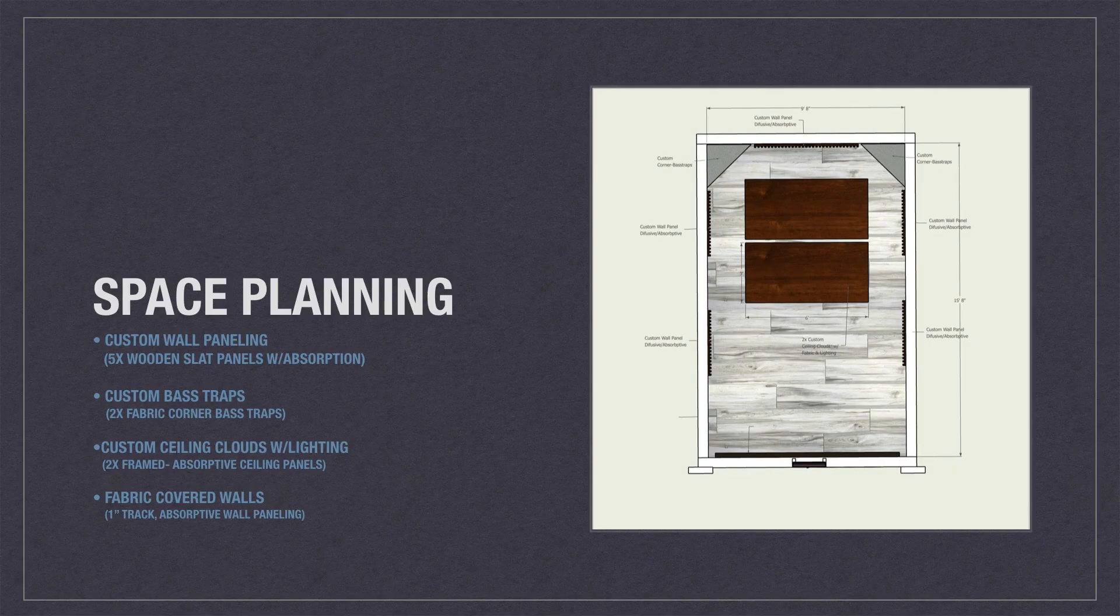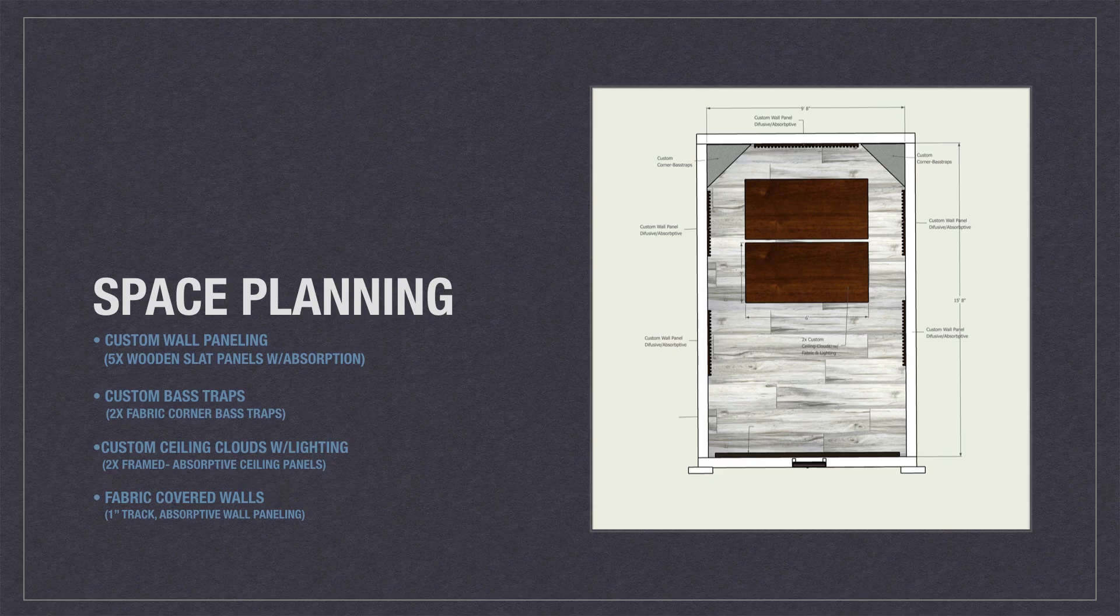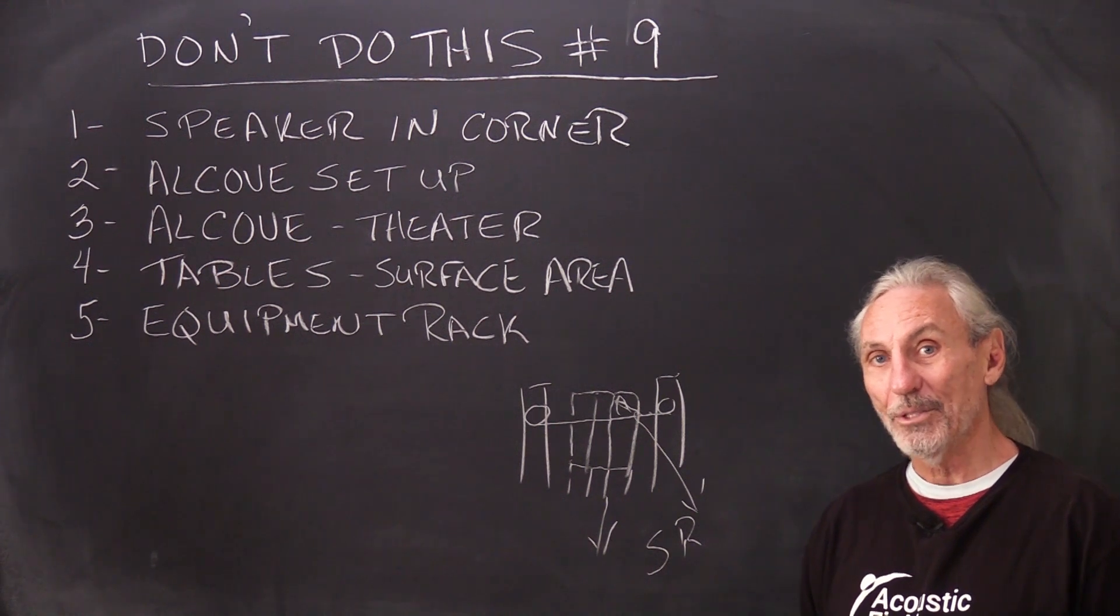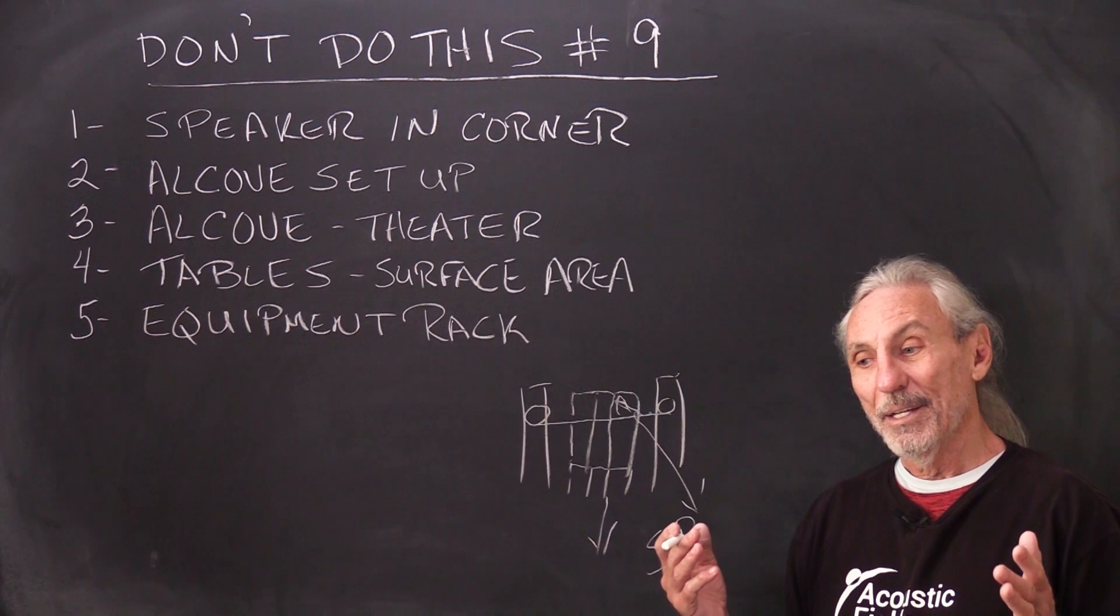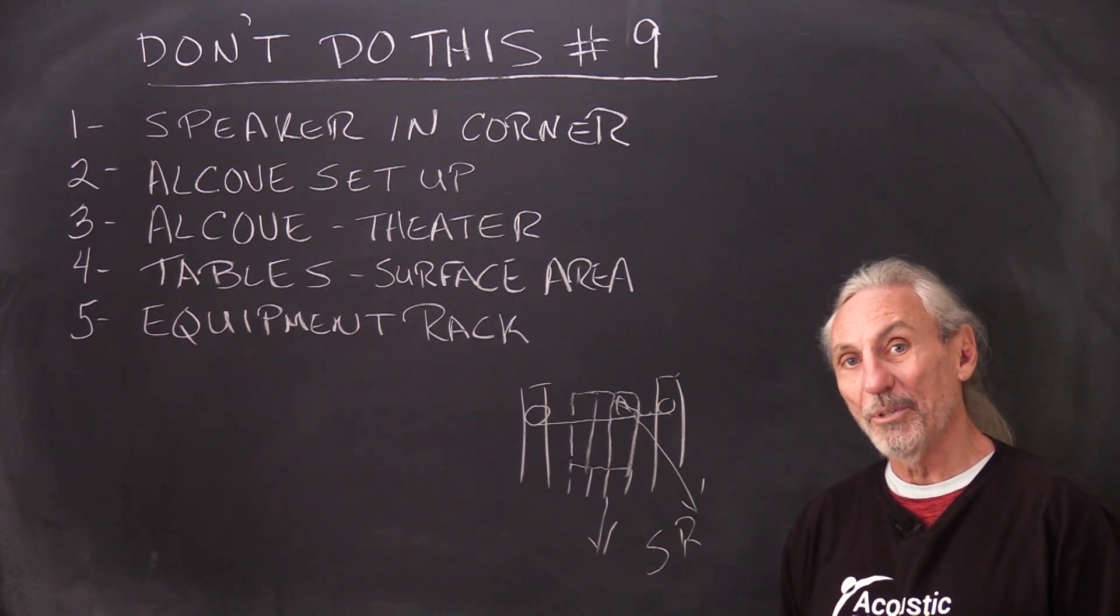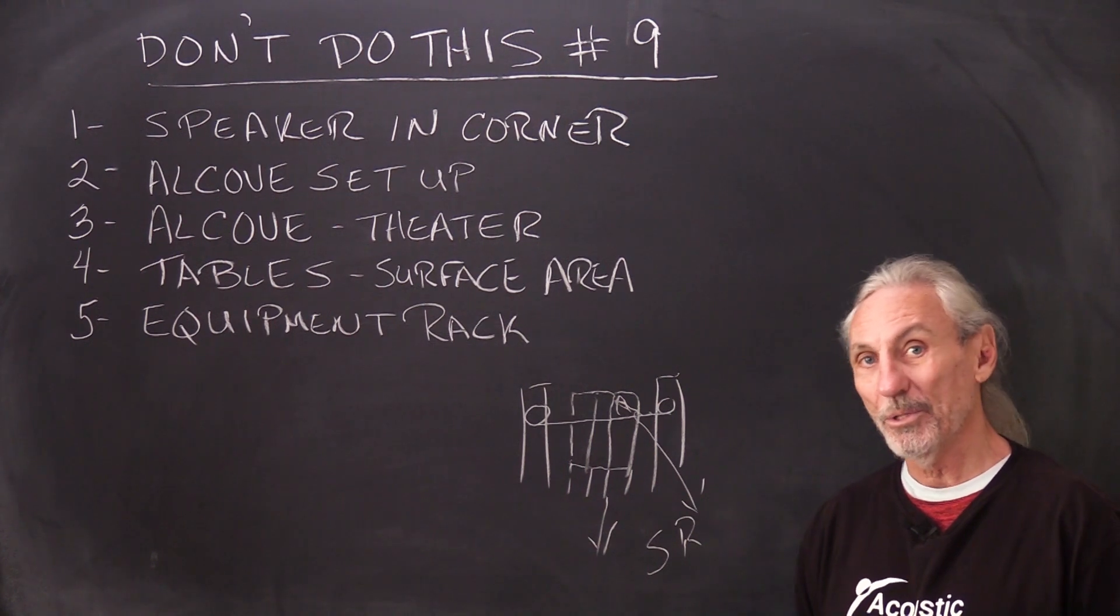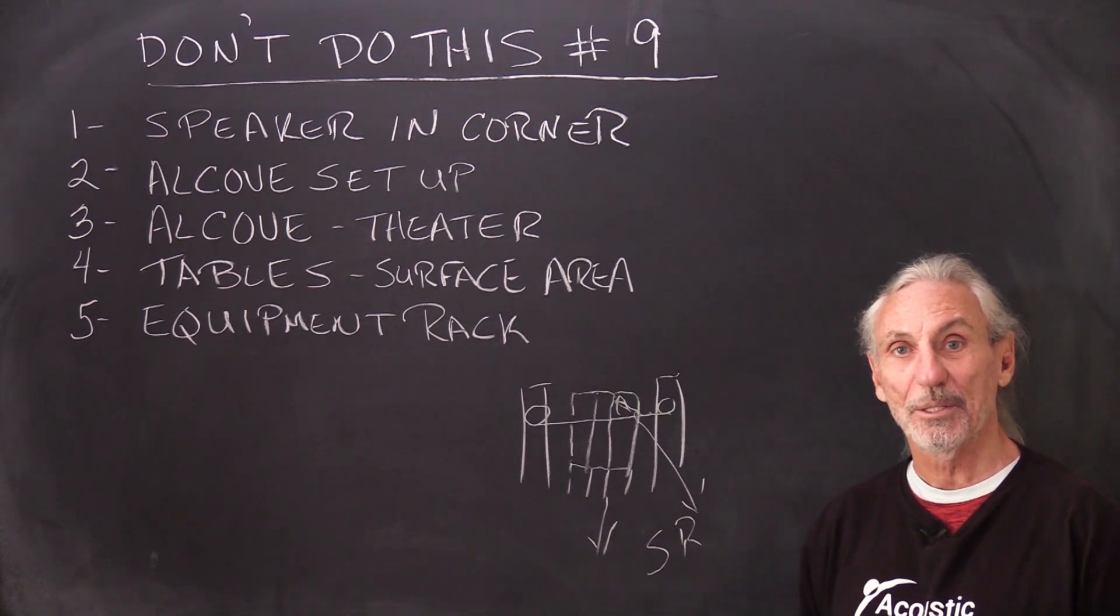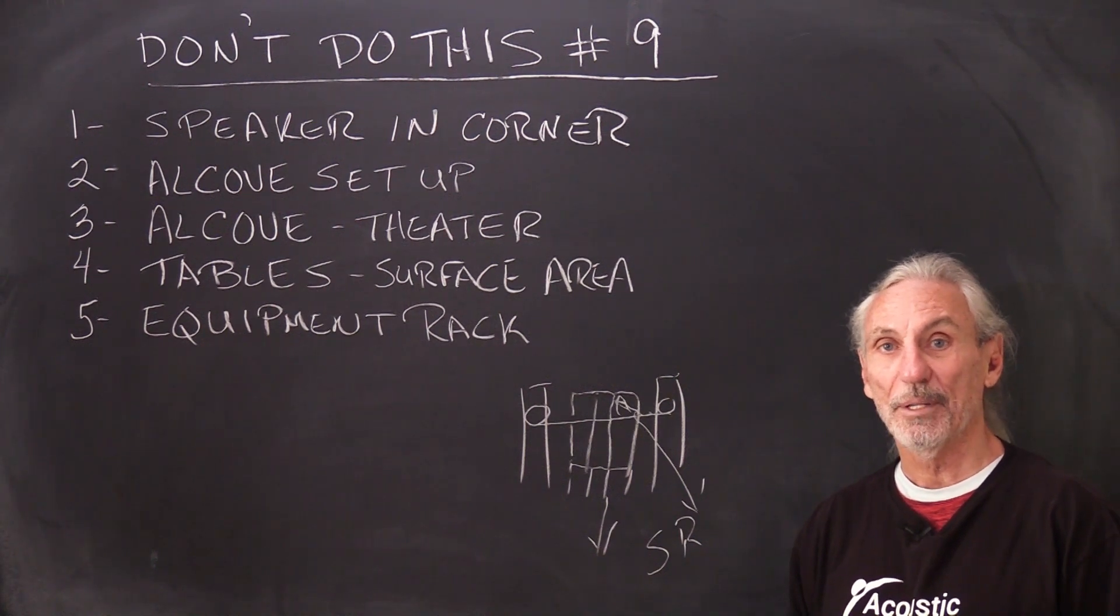In this graphic, the client sent me, you can see the big tables that he wants to use. When you have a room that's really small and you cover the floor or any surface area with a lot of hard materials, you're going to generate reflections off those surface areas that cannot be managed. And they're right close to where you're working, right close to where the speakers are set up. They're right on top of you. You have to be very, very careful about that.